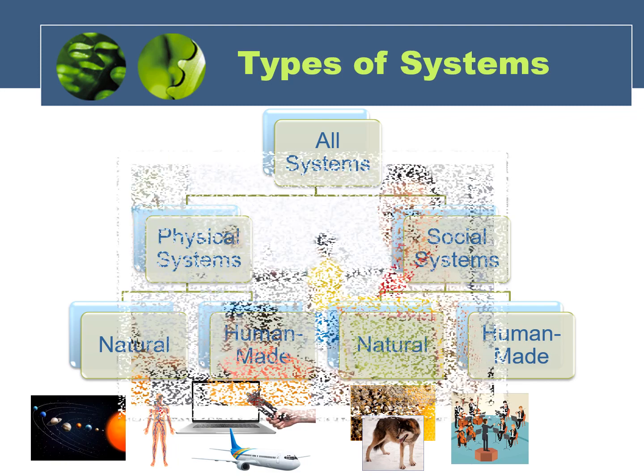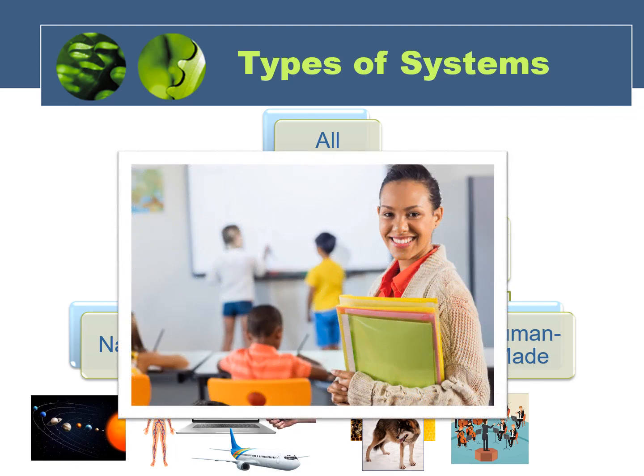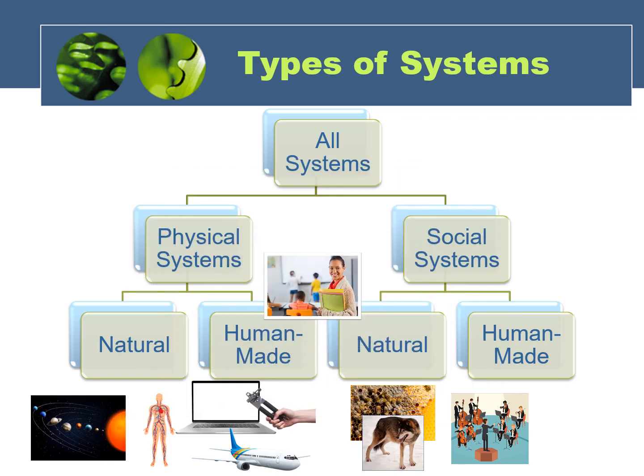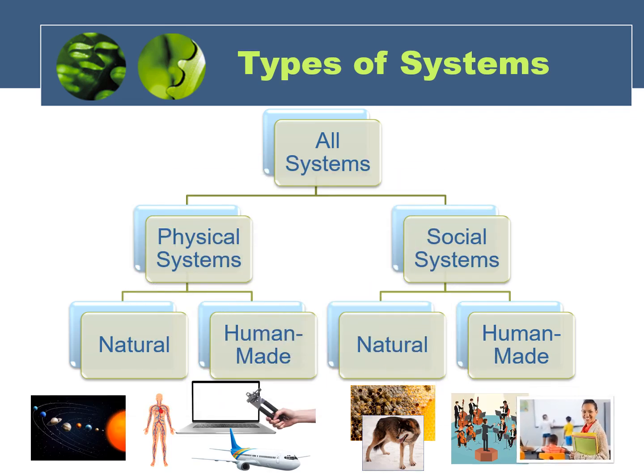Another example of a human-made social system would be a classroom or a school. Again, you have a number of different human beings that would play a role in this system — the principal, the teachers, and the students — and they all have particular jobs and interact together to carry out the function of educating students.